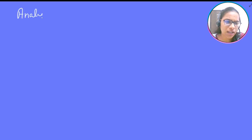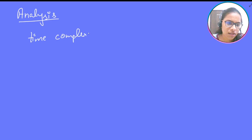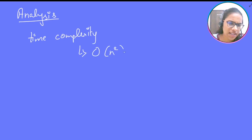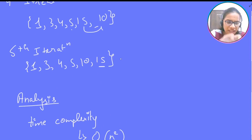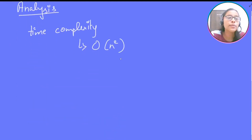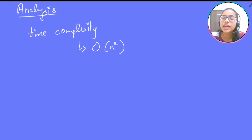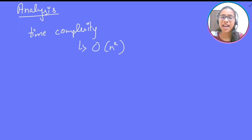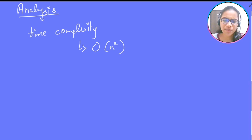Let us analyze this algorithm. The time complexity is O(n²). Is this better than selection sort or bubble sort? Insertion sort is much better than bubble sort because we are shifting elements rather than swapping. Shifting takes about one third of the processing time of a swap operation, so it has a lower overhead cost, making it faster in practice.